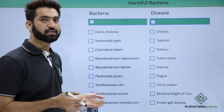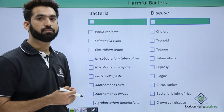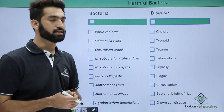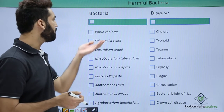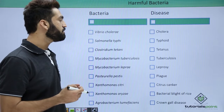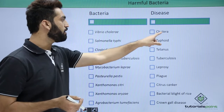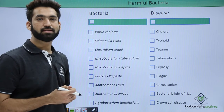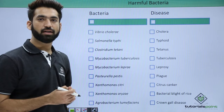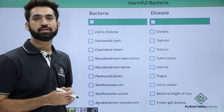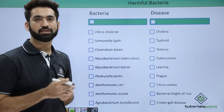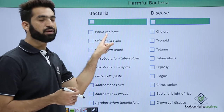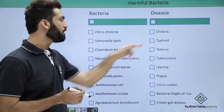You should know some diseases which are really important for humans and for plants as well. Cholera is caused by Vibrio cholerae — we have already discussed that Vibrio cholerae is a comma-shaped bacteria. So that comma-shaped Vibrio cholerae causes cholera.